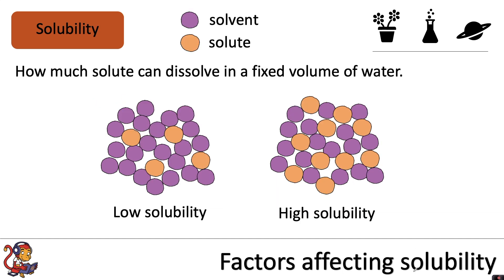Solubility describes how much solute can be dissolved in a fixed volume of water. And if you remember, the solute is the solid substance. So you could have something with a low solubility, meaning that not a lot of it will dissolve in a fixed volume of water. Or you could have something with a high solubility, where lots more of the solute will dissolve in a fixed volume of water.